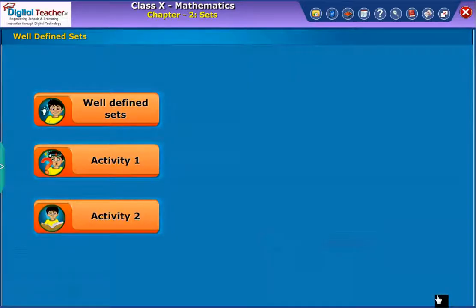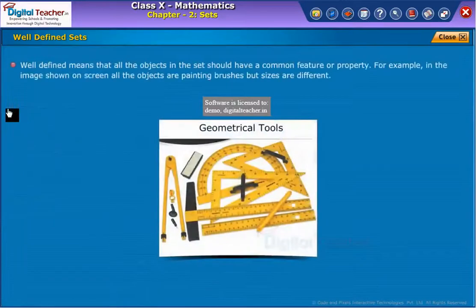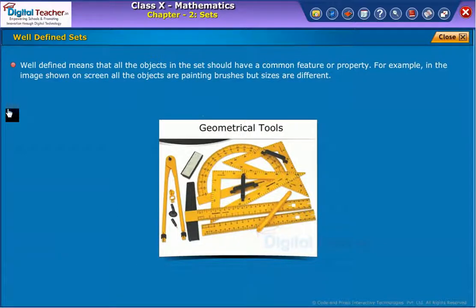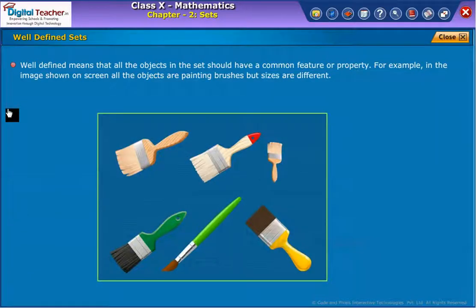Let us know about well-defined sets. Well-defined means that all the objects in the set should have a common feature or property. For example, in the image shown on screen, all the objects are painting brushes, but sizes are different.